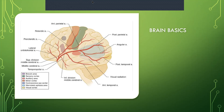So if you have no idea what the rolandic or pre-rolandic arteries are, where they are situated, or how to even spell them — don't stress about it. Remember, these are branches of the middle cerebral artery.